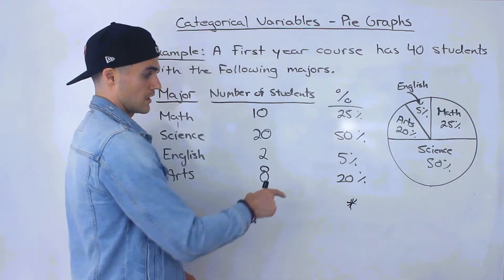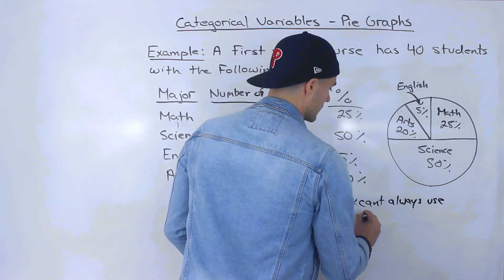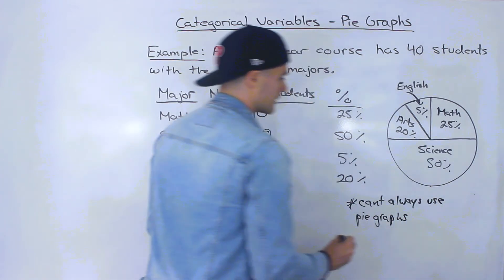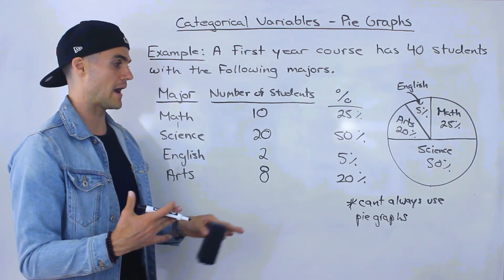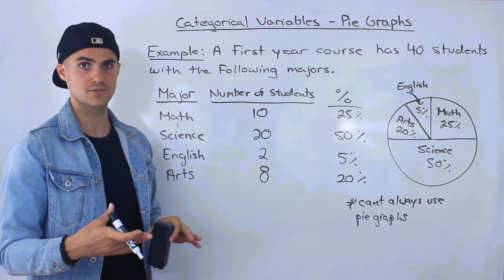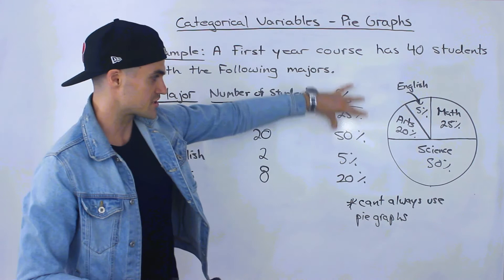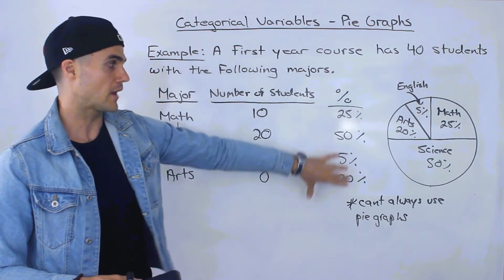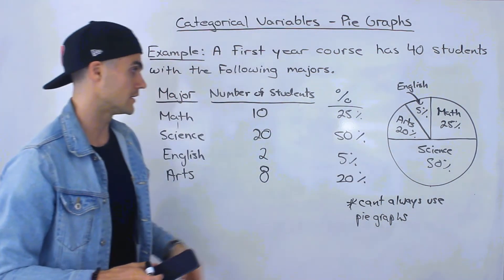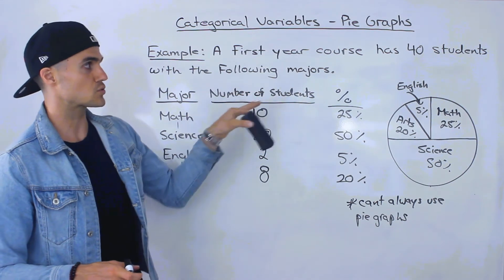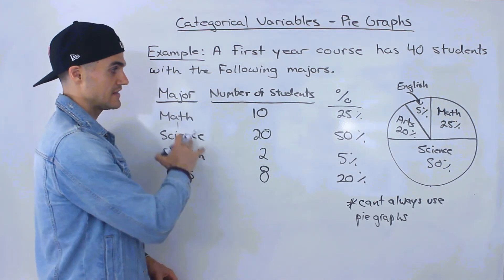One important note: you can't always use pie graphs to analyze categorical variables. Bar graphs, which we'll cover in the next video, you can always use — but pie graphs have instances where they don't work. The short reason is that sometimes the percentages won't add up to 100%; they may exceed 100%. If they don't add up to 100%, you can't make a pie that represents the whole. This happens when individuals can fall into multiple categories, but in this case each student can only have one major, so we're fine.